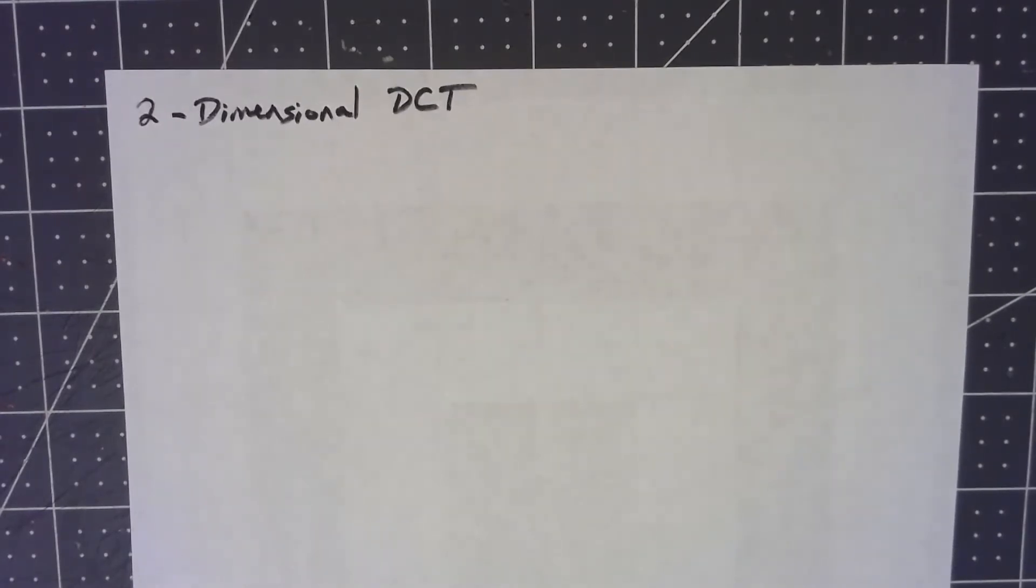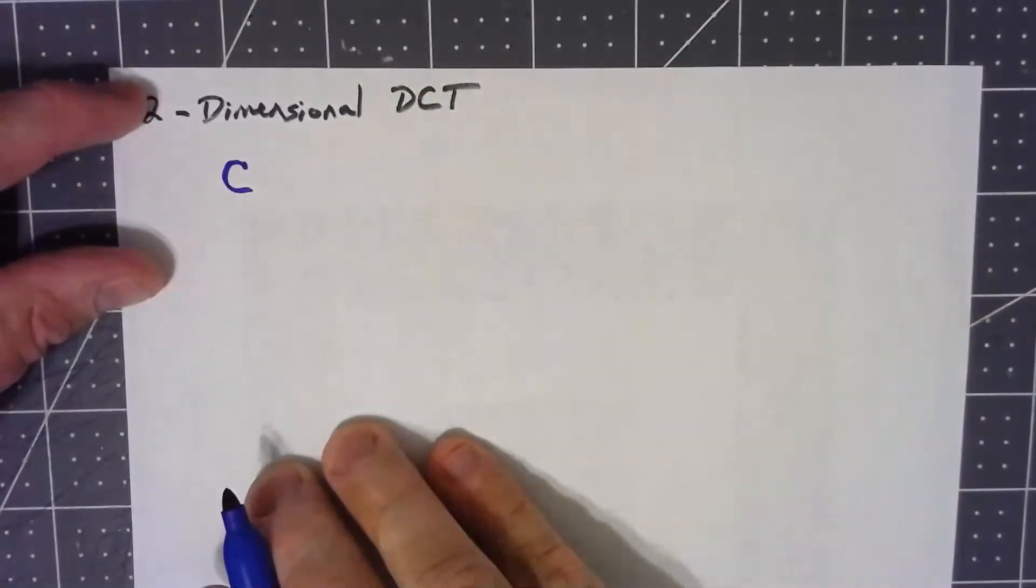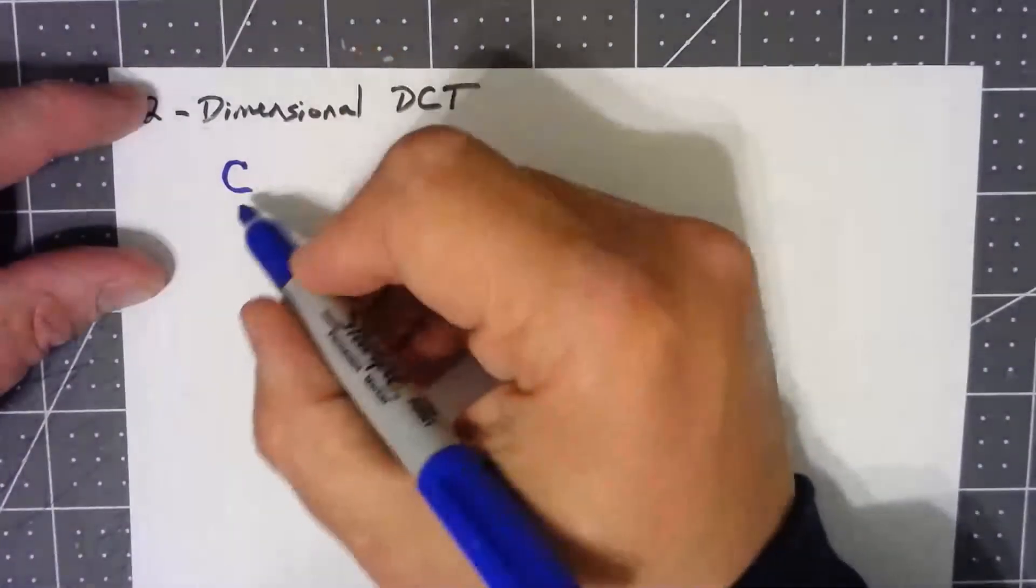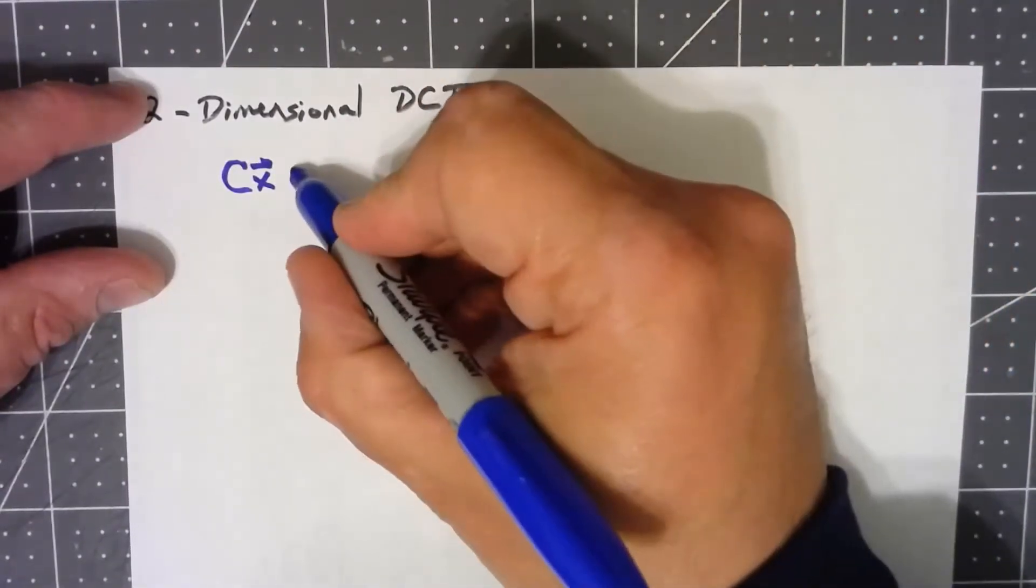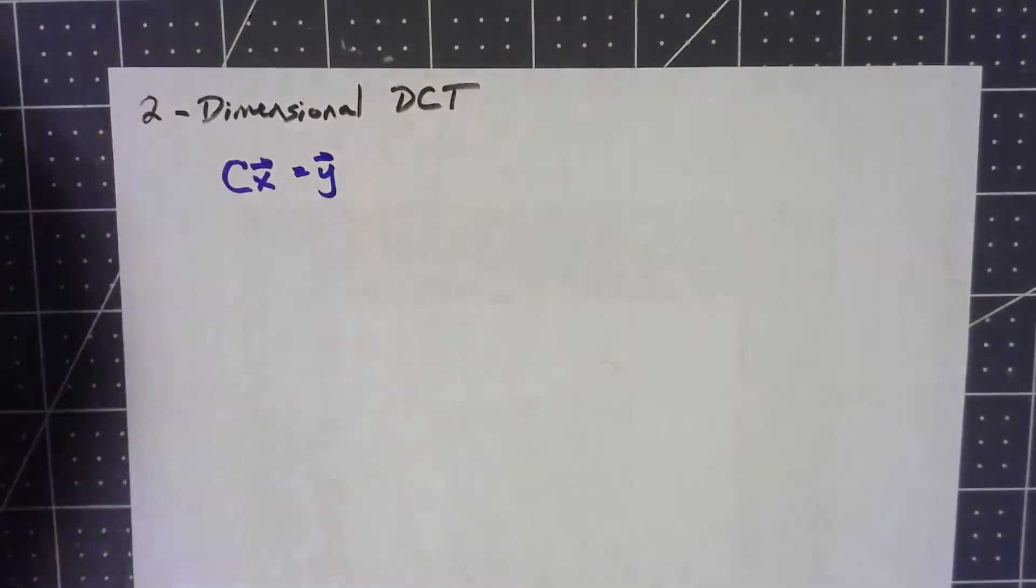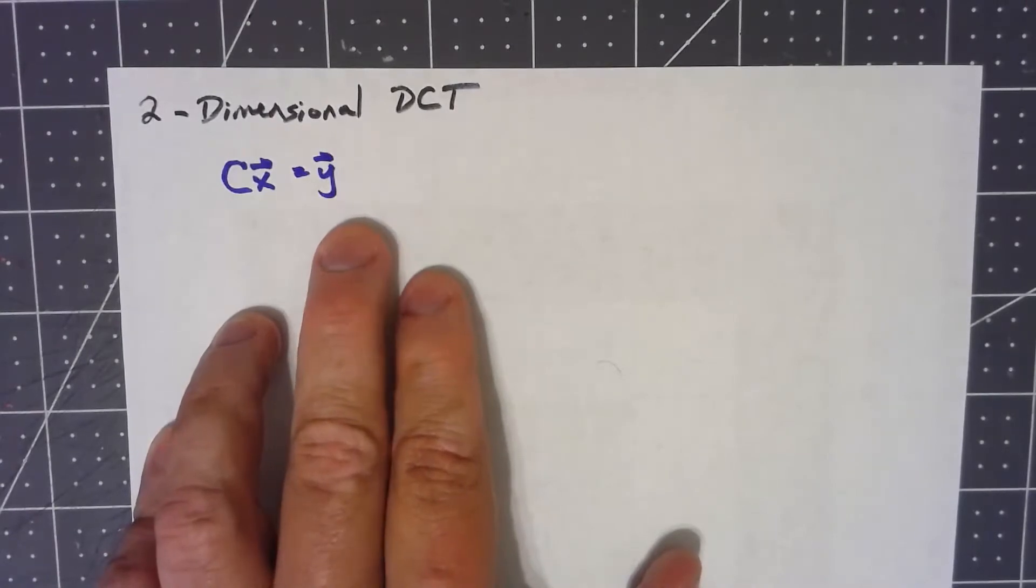We've talked about the one-dimensional discrete cosine transform, so how do we take this to two dimensions? In the context of doing the one-dimensional DCT, we came up with a matrix C, and we were saying that multiplication by that matrix times our data vector would give us our DCT vector. The DCT vector, just like the Fourier transform, was effectively coefficients of different cosine terms.